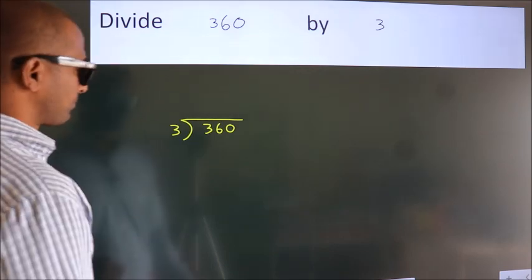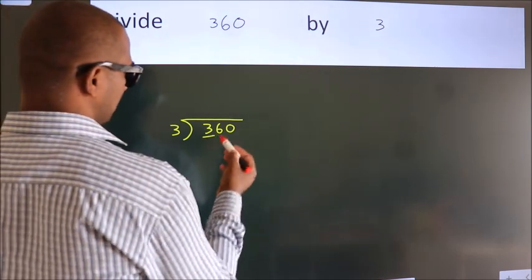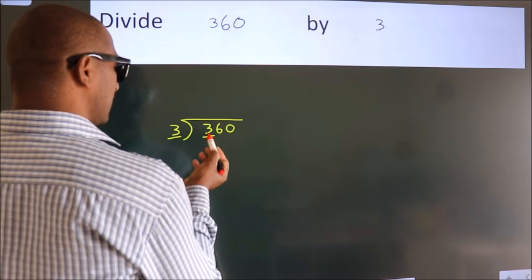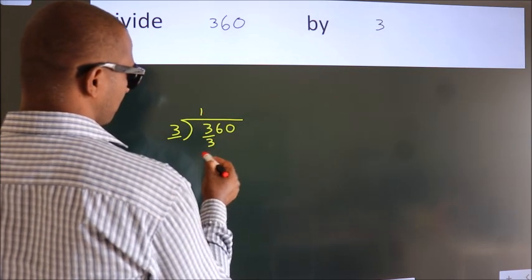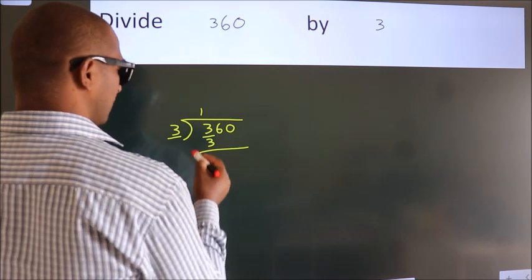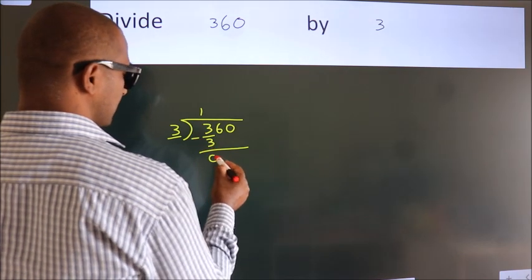Next. Here we have 3. Here 3. When do we get 3? In 3 table, 3 once, 3. Now, we should subtract. We get 0.